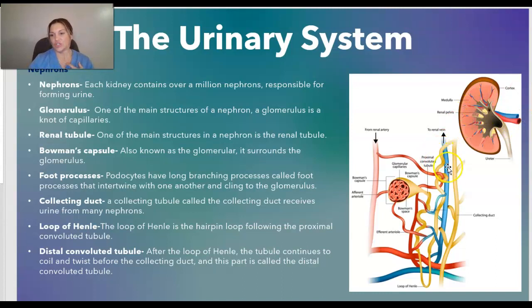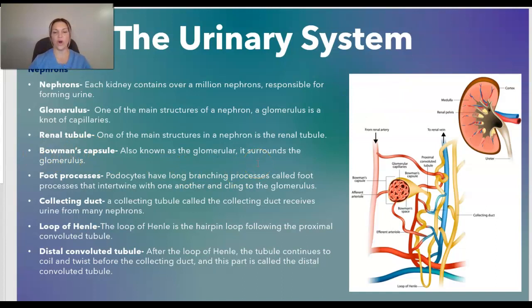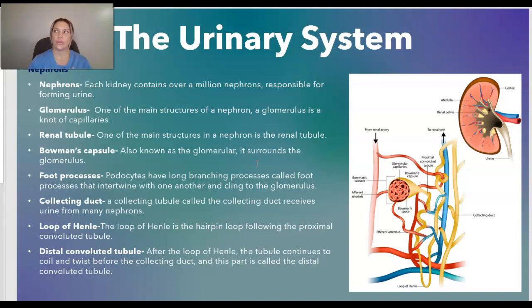You can see all of these structures in this diagram. The Bowman's capsule, also known as the glomerular capsule, surrounds the glomerulus. Podocytes have long branching processes called foot processes that intertwine with one another and cling to the glomerulus. The collecting duct receives urine from many nephrons. The loop of Henle is the hairpin loop following the proximal convoluted tubule, as you can see in the diagram.